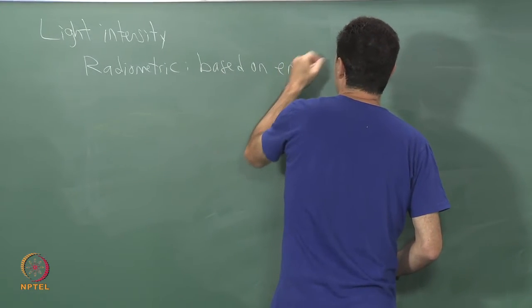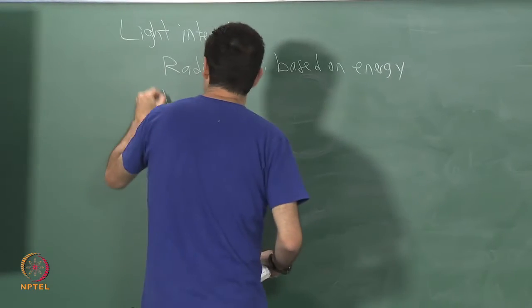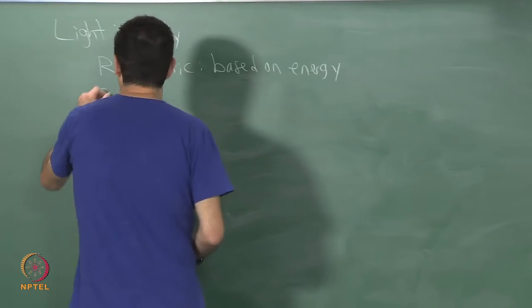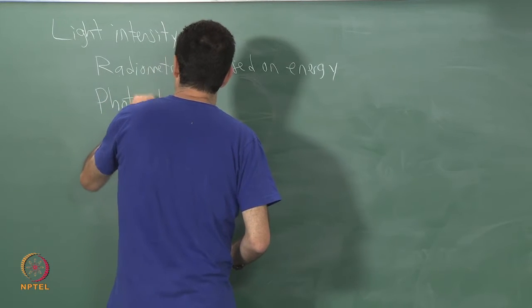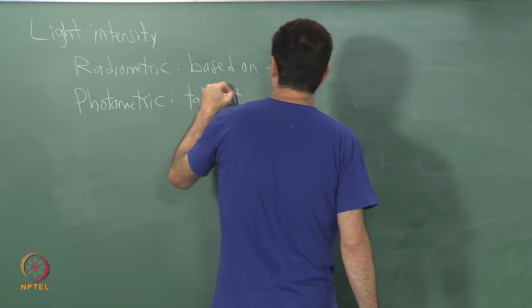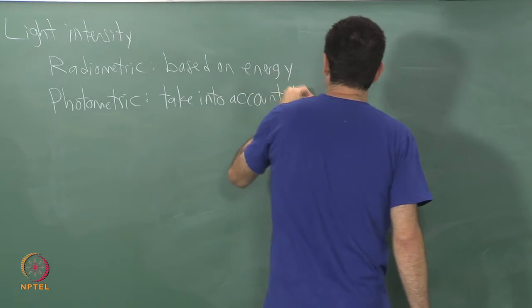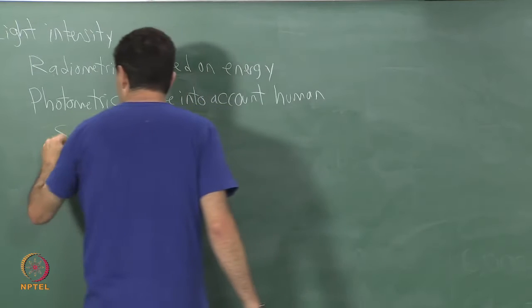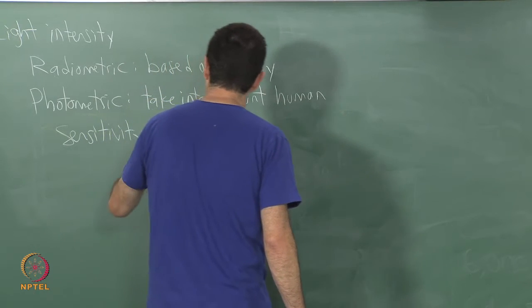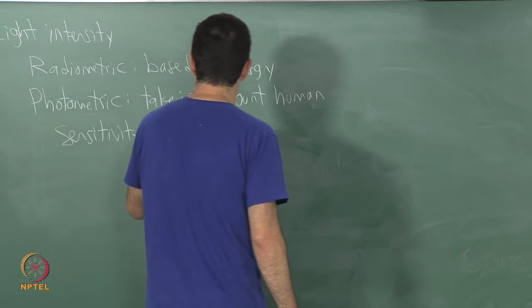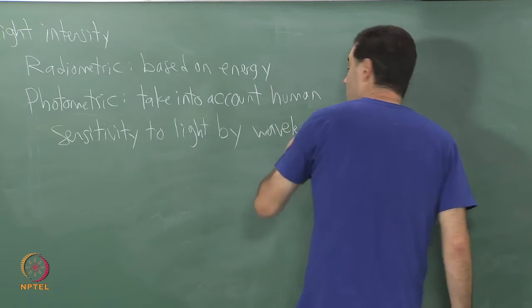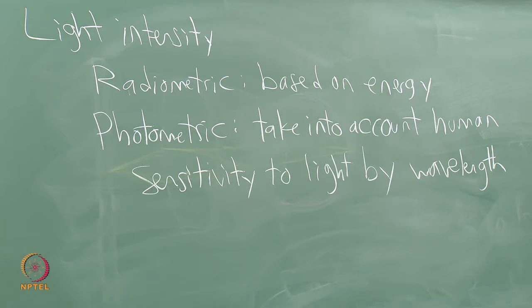What is instead used when we talk about perception of light, when we talk about light in the context of human vision, we use what are called photometric measures which take into account human sensitivity to light by wavelength.